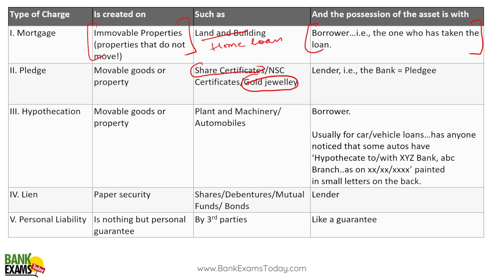Hypothecation is created on movable property such as plant, machinery, and automobiles. The borrower has the possession. For example, a car loan — it is a movable asset, you got the possession, you drive it, you enjoy the asset. And in case you default, the bank is going to sell off that asset.